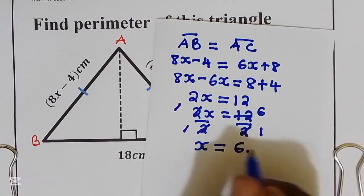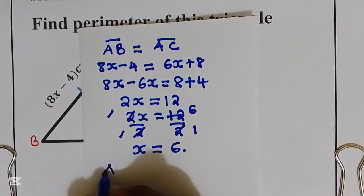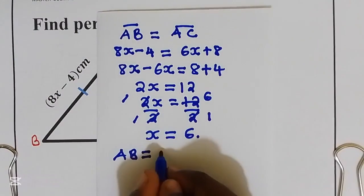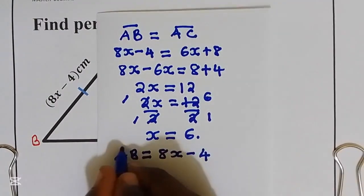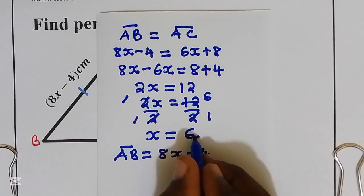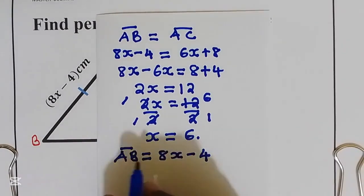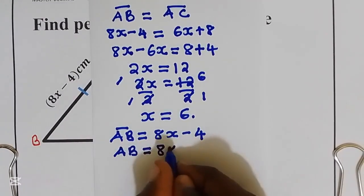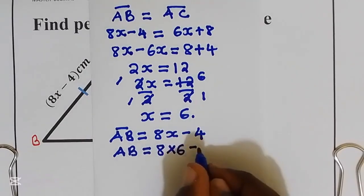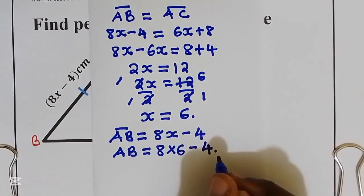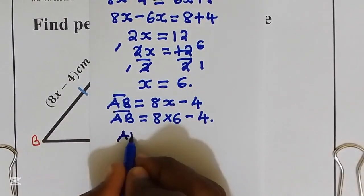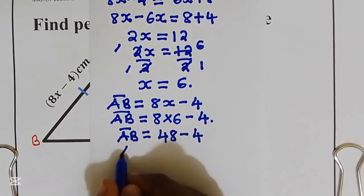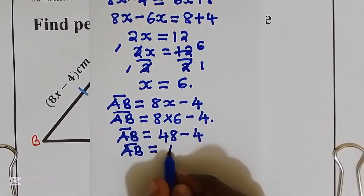But we know distance AB, this is equal to 8x minus 4. But we get X is equal to 6. I'm going to substitute X equal to 6 to distance AB. That is AB is equal to 8 multiplied by X which is 6, then I'll take away 4. AB is equal to 48 minus 4, that AB is equal to 44.